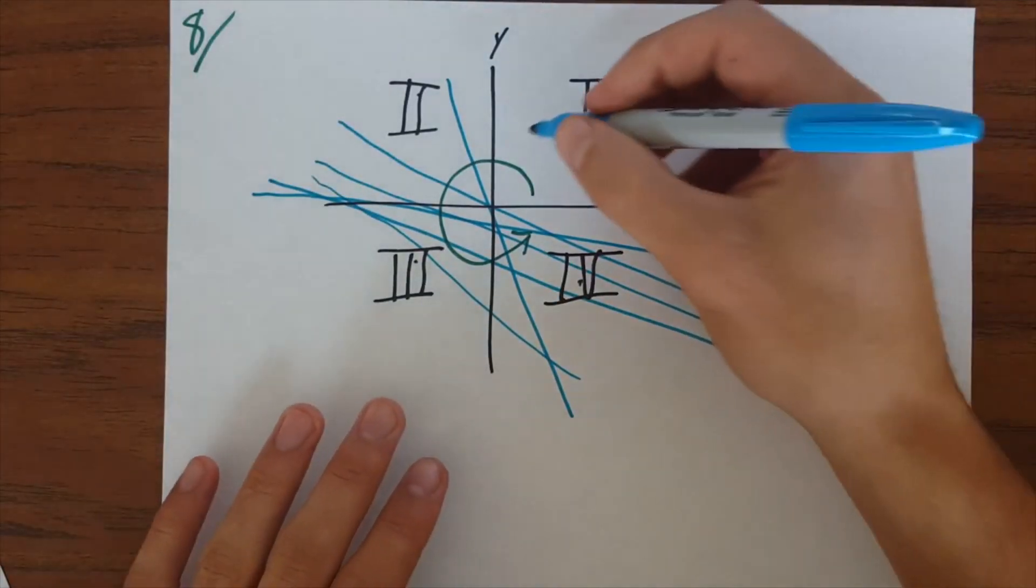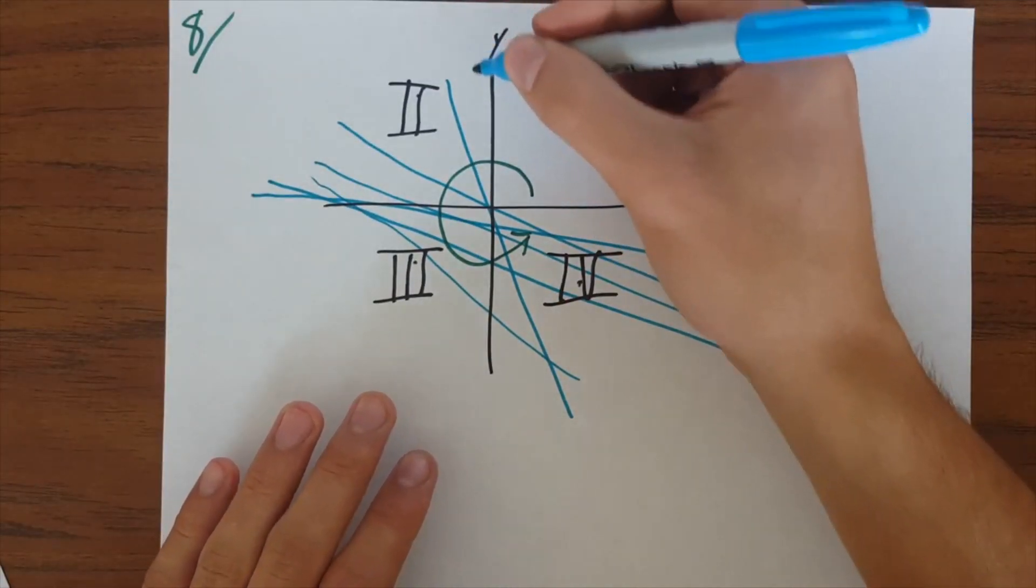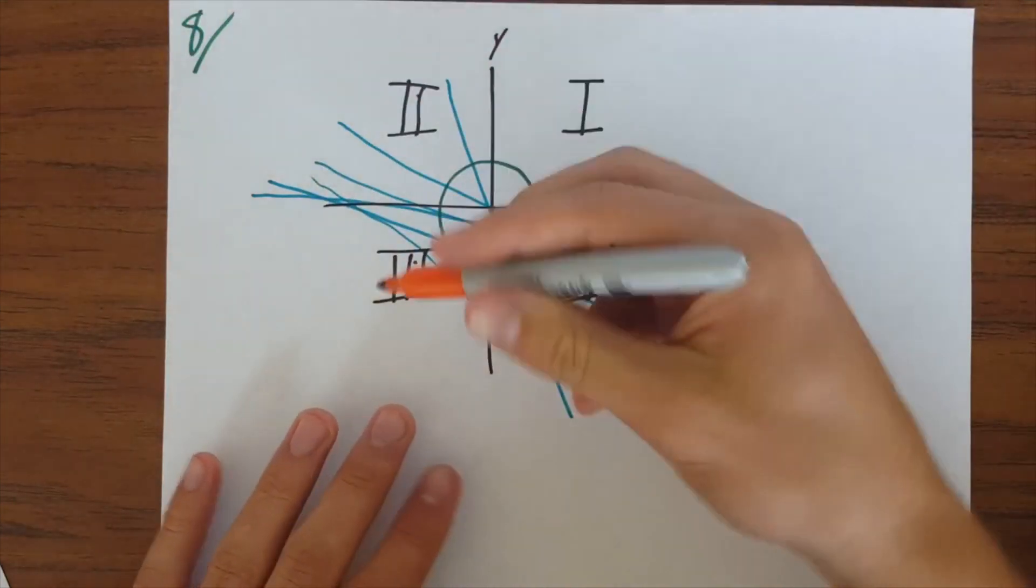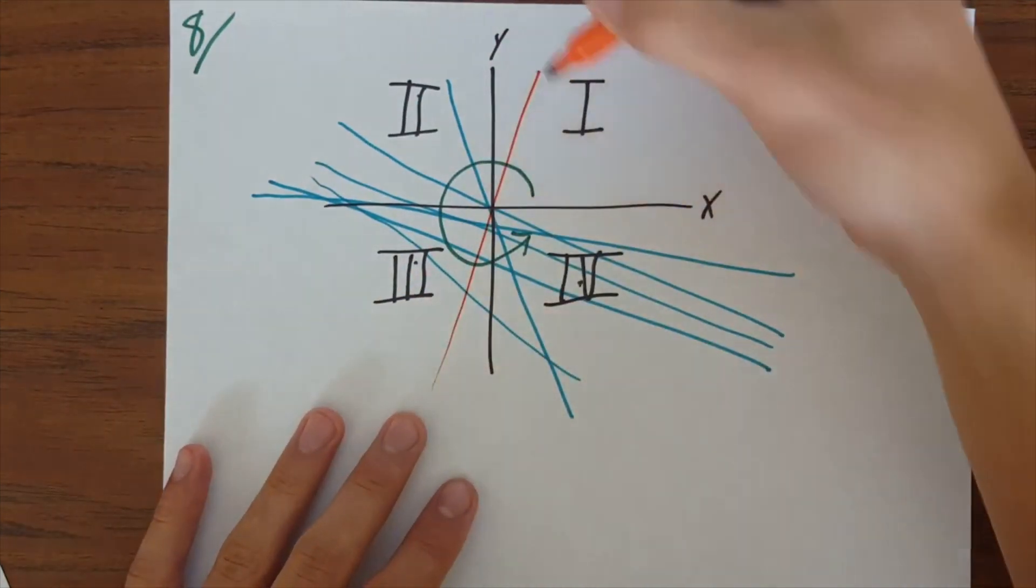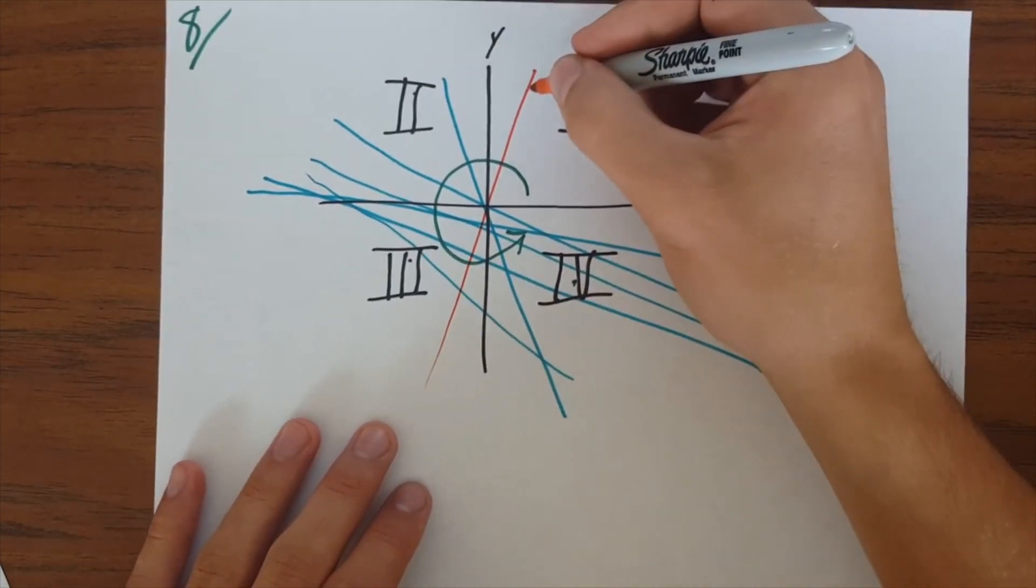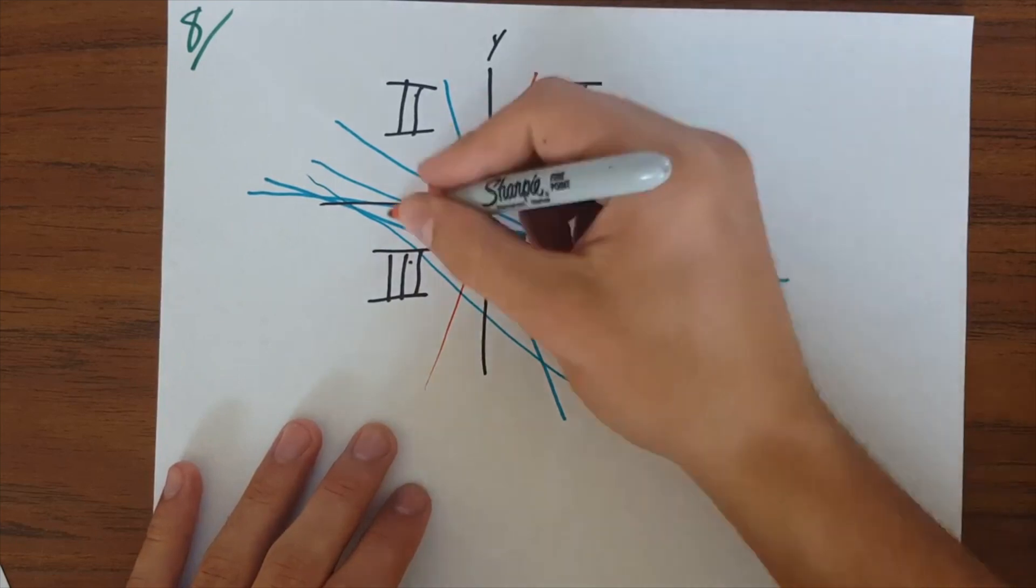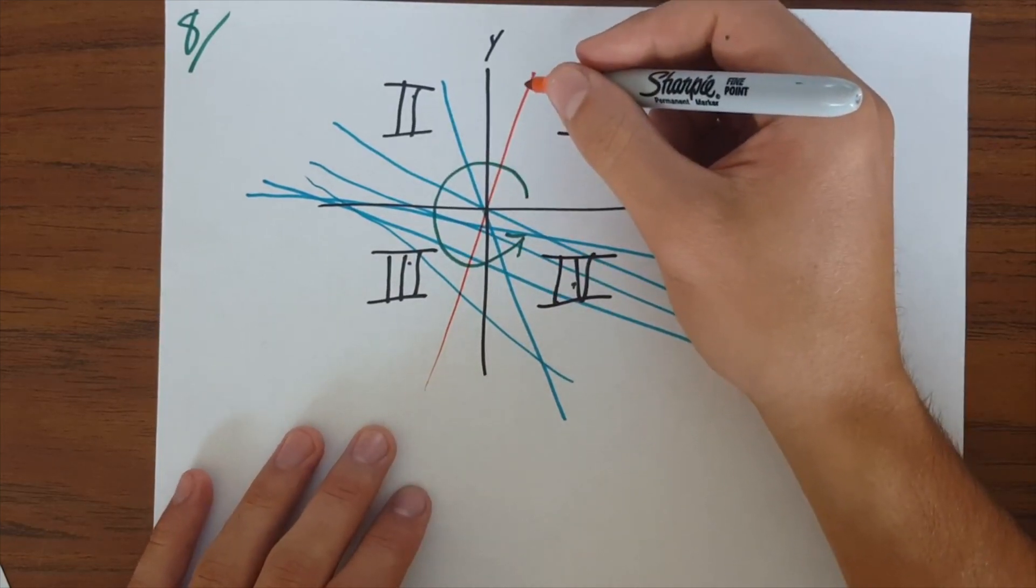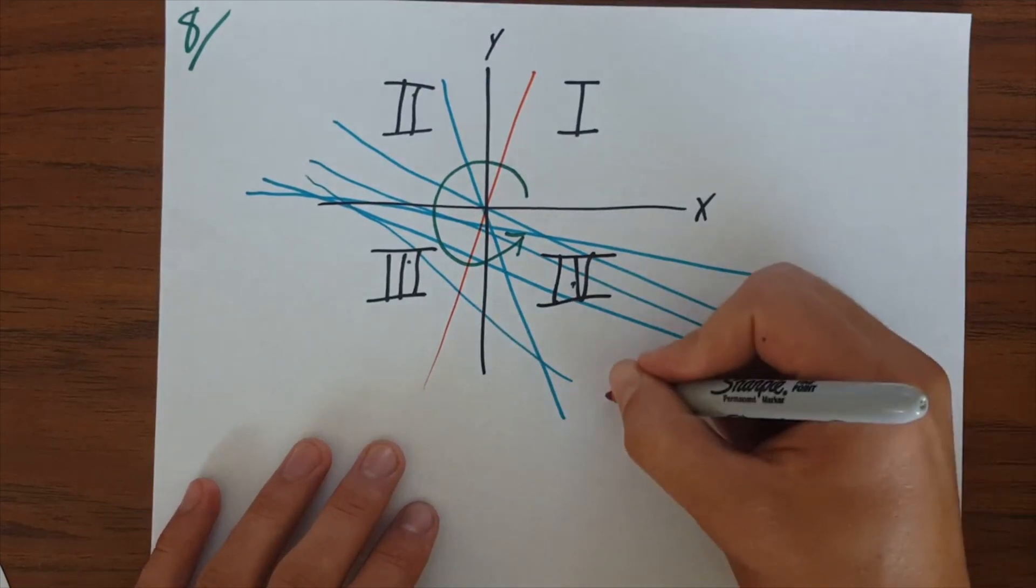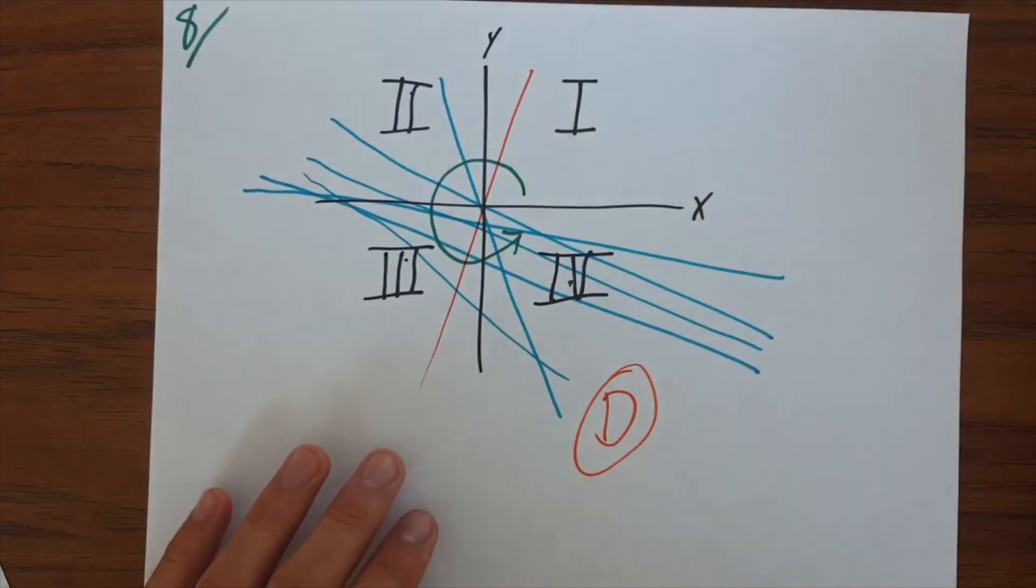And the thing that you notice is, none of them have a slope, right, that's, you know, how steep the line is. None of them slope that are going like this, okay. And what that means is that none of the lines would have, none of the possible lines would have a positive slope, which means that the slope has to be negative. So the answer then is D. The slope of line L has to be negative.